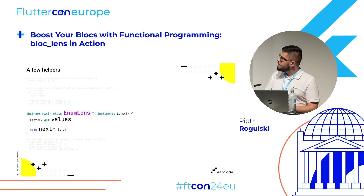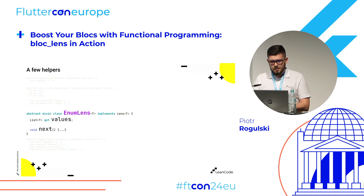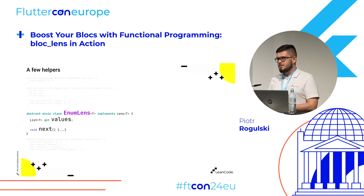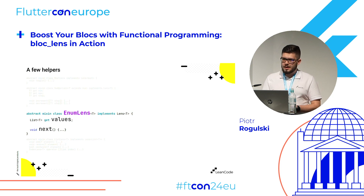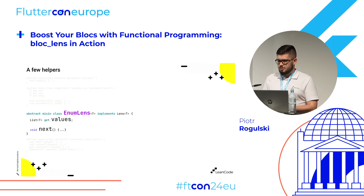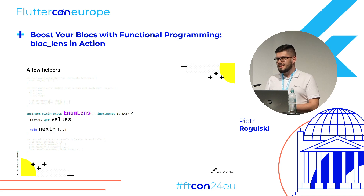Another kind of — maybe weirdly named — class is EnumLens. Most of you know what enums are, but it's not really about enums in the Dart sense. It's about values that can have one of a few possible values. For example, the language in your app — you may want to localize your app in Polish, English, and German. Those are three values the locale can have, and everything else is an illegal state, so we want to prevent setting this value to something it's not supposed to be. This is a helper that ensures you only set values that you can actually set.